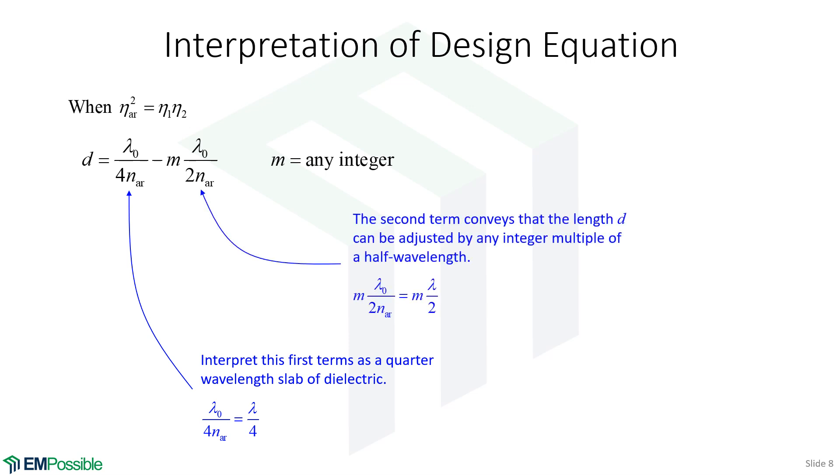Well, if we look at this second term, it's really the same thing as this first term, but with a 2. So this is a half wavelength, but then we have plus or minus integer multiples of this half wavelength. And that's how we interpret M.